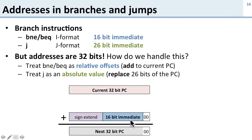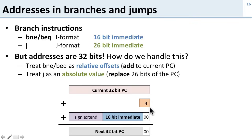In addition to sign extending and shifting, we also add 4, because the processor is hard-coded to always add four to advance to the next instruction. So to calculate the branch target, we take the current PC, add 4, then add the sign-extended and left-shifted 16-bit immediate, and that gives us our next PC.